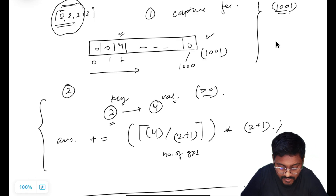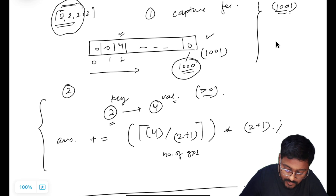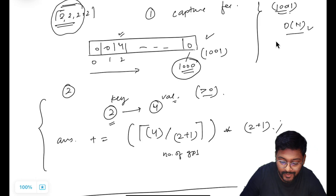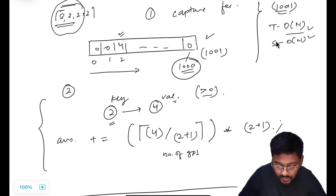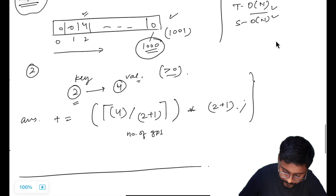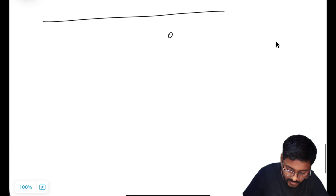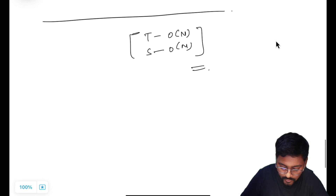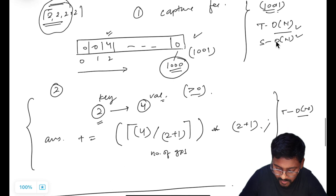This hash table is of fixed size 1001 because the maximum value in the answers array can go up to 1000. So it is O(n) time to capture the frequency, O(n) space to store the frequency, and O(n) time to calculate the answer — ultimately O(n) time and O(n) space.